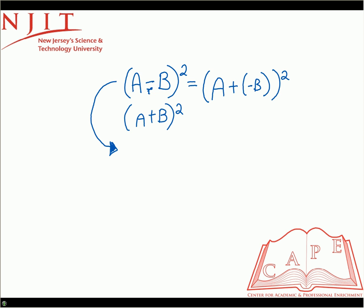Again, first term squared, so it's going to be A squared, then plus 2 times each term, so it's 2 times A times (-B). And then finally plus the second term squared, so it's going to be (-B) squared.